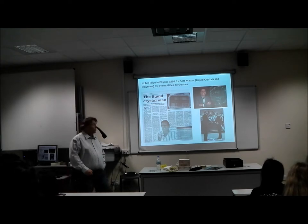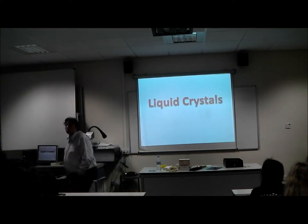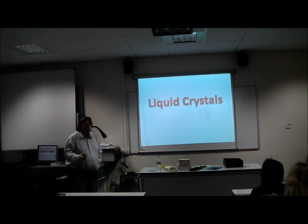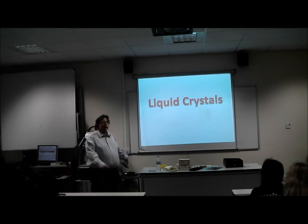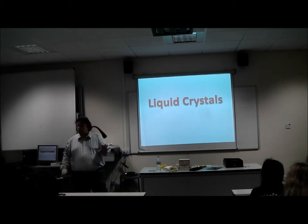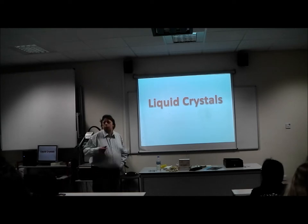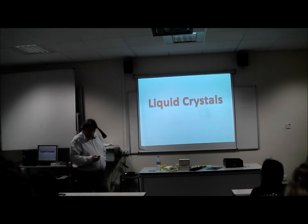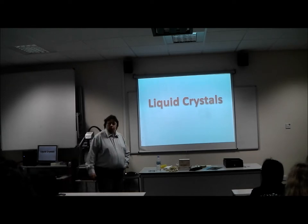That was the Nobel Prize for soft matter and liquid crystals. So the first thing we're going to talk about are liquid crystals. We're going to talk about three categories: liquid crystals, polymers, and colloids, because you'll find those everywhere in life, and that gives you a better relation to these kinds of materials.